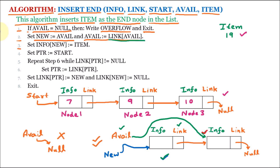Line number 3 of the algorithm says: set info of new equal to item. We know that new is a pointer pointing to the first node, and the info part of that node will be having the item, and the item is 19. So in this new node we are placing 19.